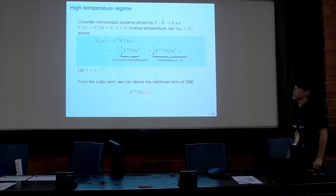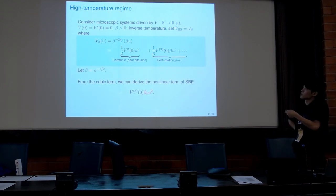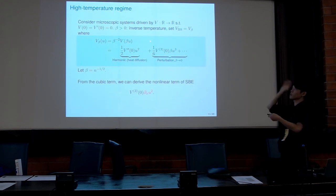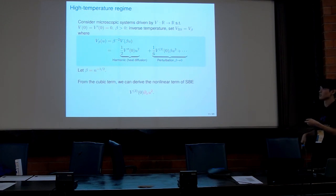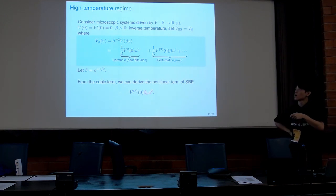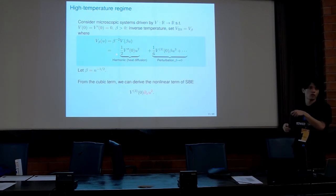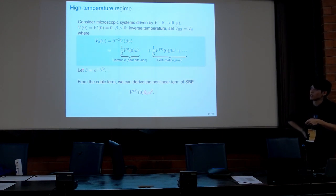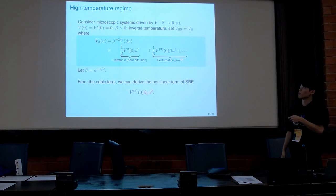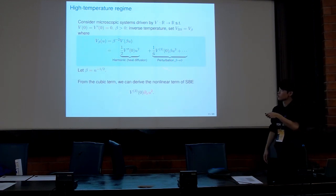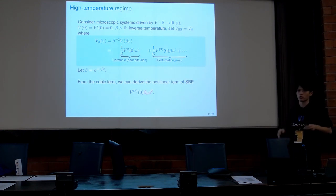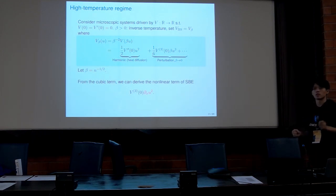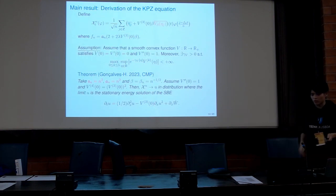Let me give you the idea of the high temperature regime. We consider a potential defined by rescaling the variable by the parameter beta, which is basically the inverse temperature, and let beta tend to zero as the scaling parameter goes to infinity. By a simple Taylor expansion, we can extract the harmonic part — the purely quadratic function — as the main part, which macroscopically corresponds to heat diffusion, plus a perturbation given by a cubic function. Choosing beta equal to 1/√n makes this perturbation also of order 1/√n.